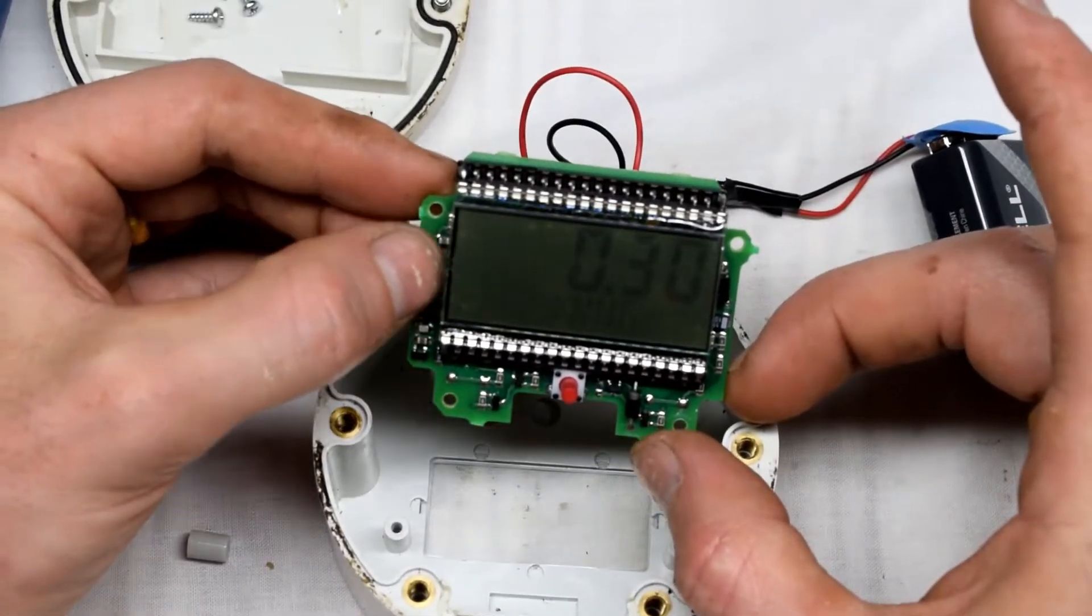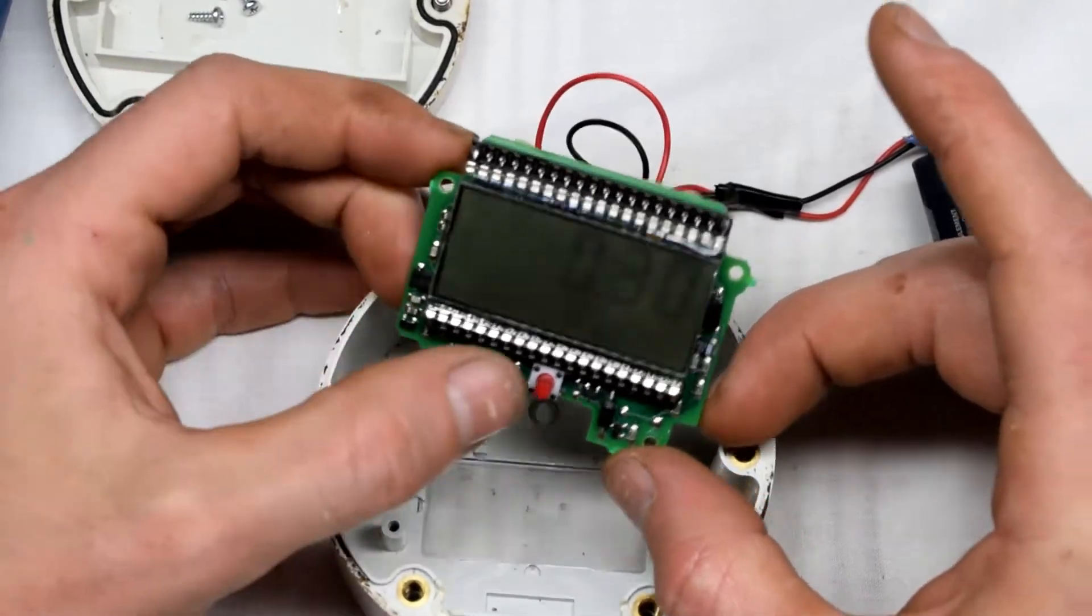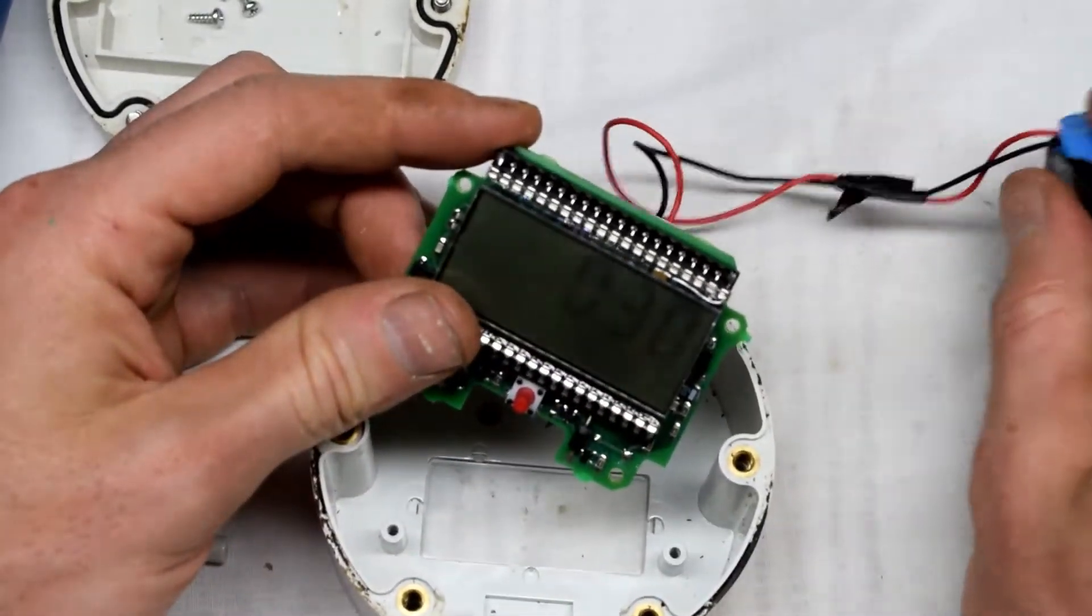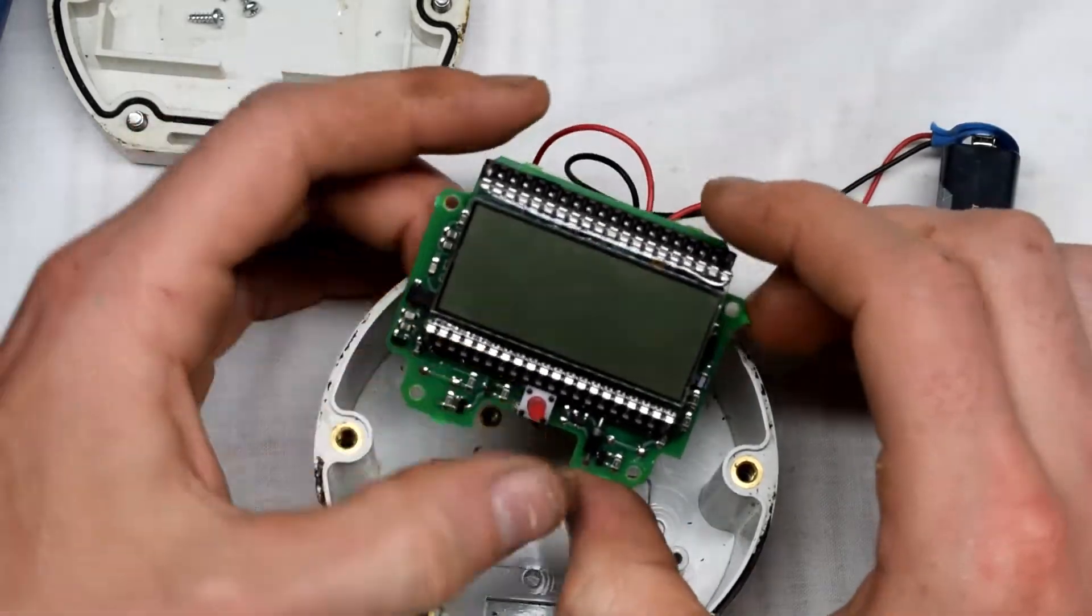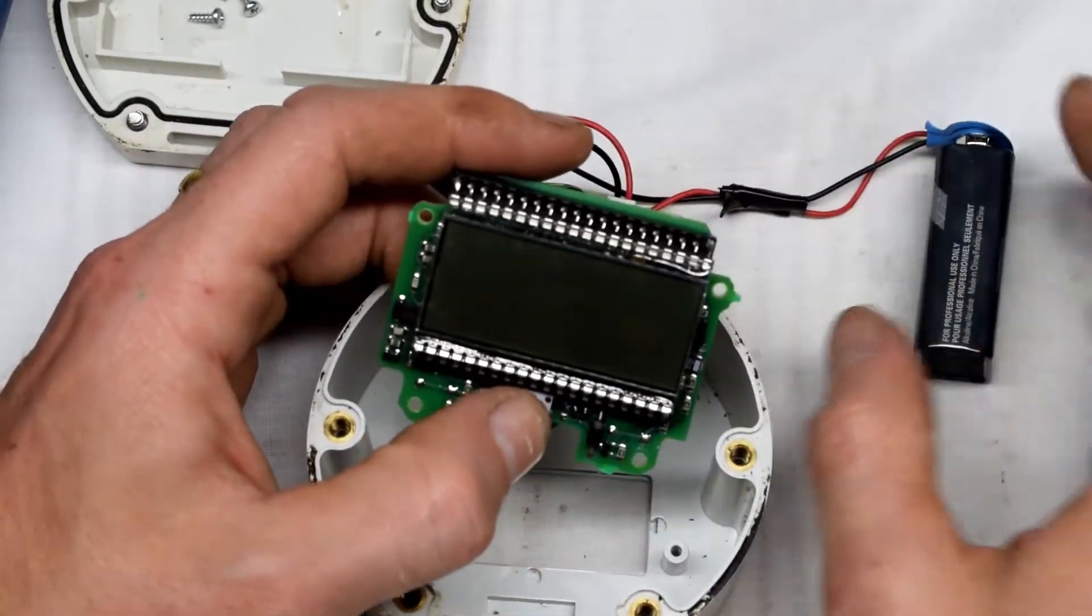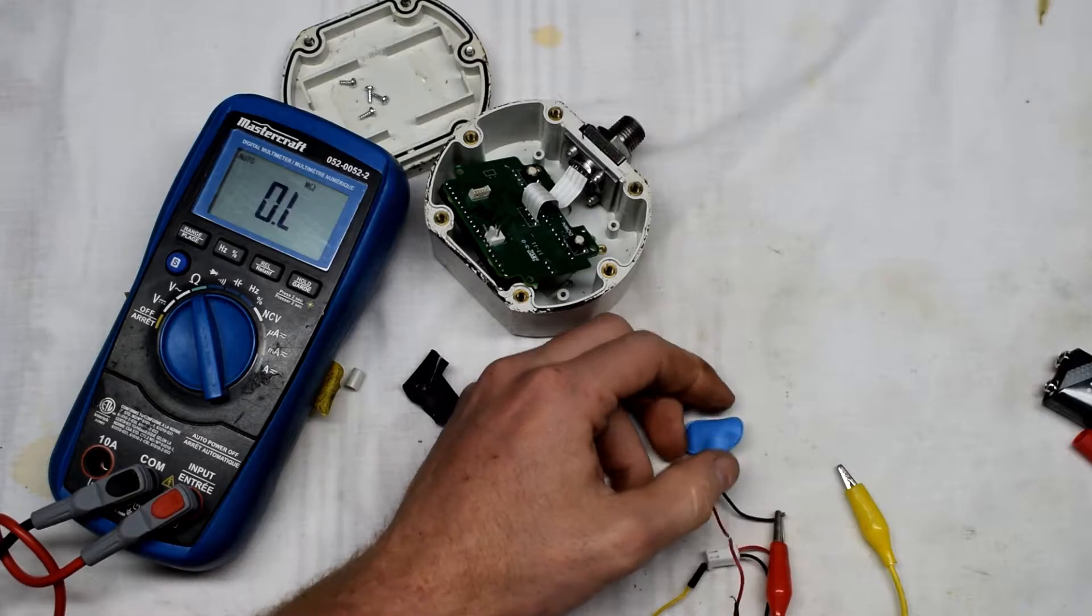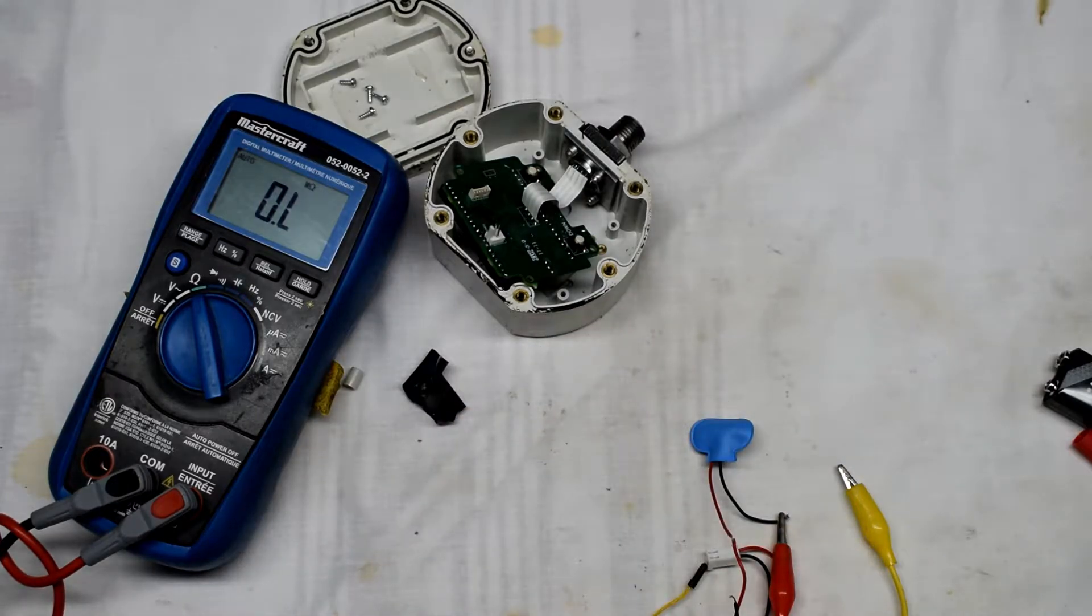The screen's on, buttons working, everything's fine, but then all of a sudden it just turned off. This indicates the circuitry inside is working okay because it had the display. It's to do with the connection.